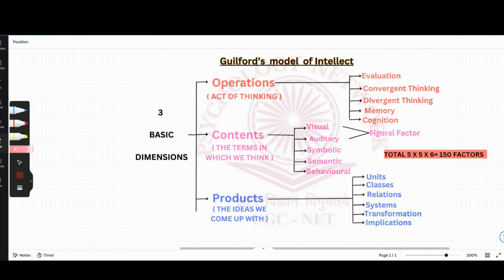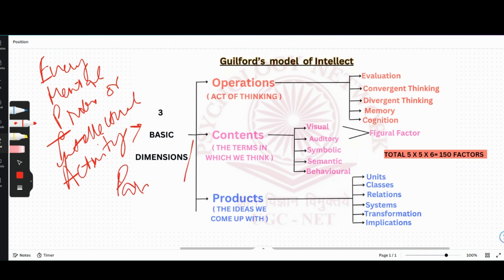What they concluded is that every mental process or intellectual activity can be described on the basis of these three basic dimensions or parameters. Now what are the three basic dimensions? The three basic dimensions are operations, contents, and products.